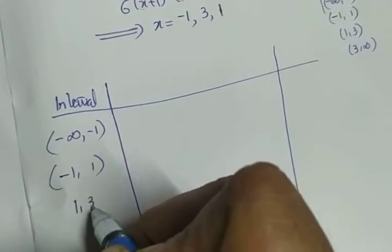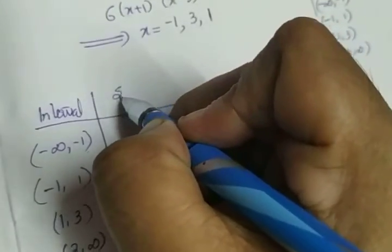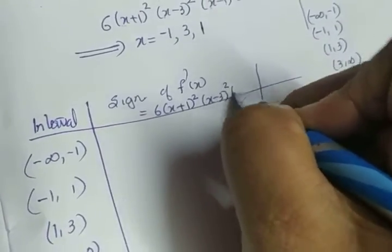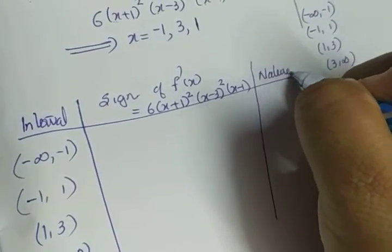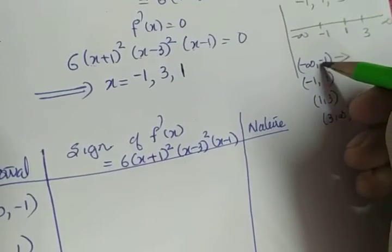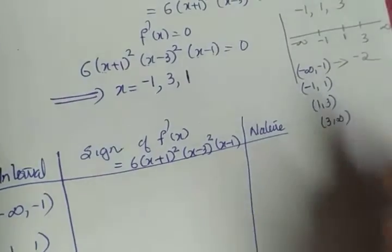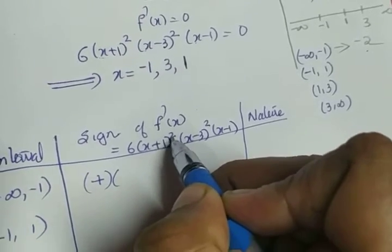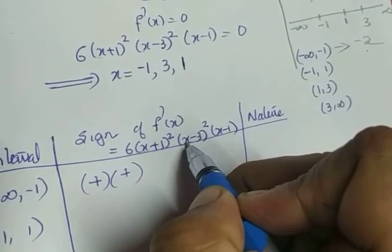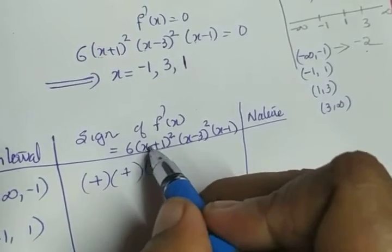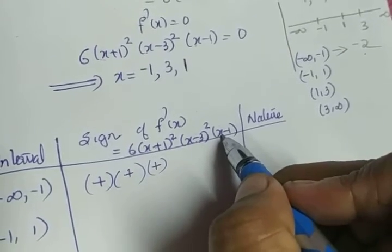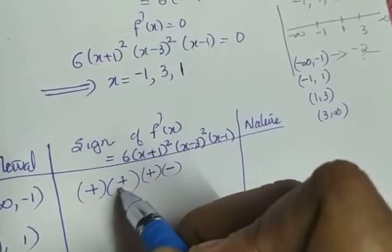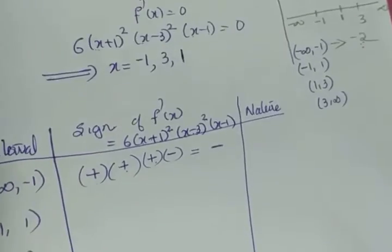We draw a sign table with the four intervals: (-∞,-1), (-1,1), (1,3), (3,∞). f'(x) = 6·(x+1)²·(x-3)²·(x-1). In (-∞,-1), take x = -2: 6 is positive, (-2+1)² = (-1)² is positive, (x-3)² is always positive. For (x-1): -2-1 = -3, which is negative. So overall sign is negative.